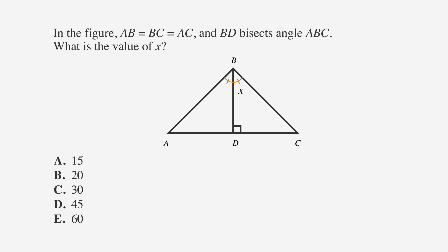Let's start by underlining the facts: AB equals BC, which equals AC. We can mark AB and BC with a single line to indicate they are the same length, and draw a line below AC to mark it as equal. Since all sides of this triangle are equal, we know it is an equilateral triangle.